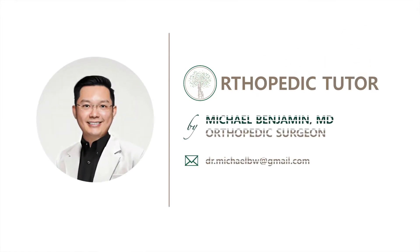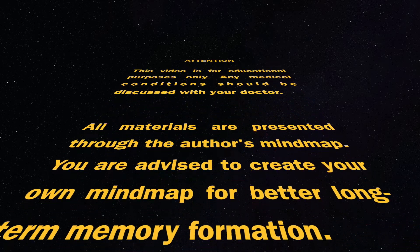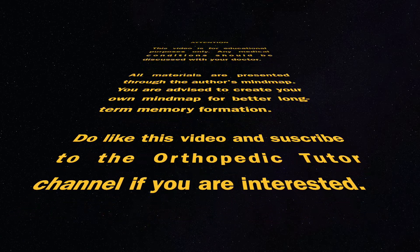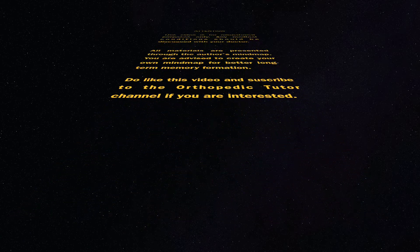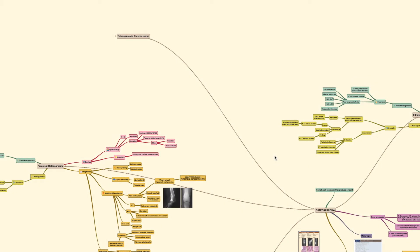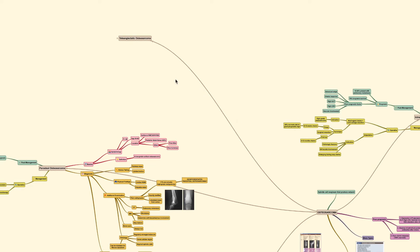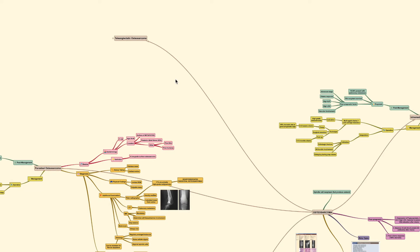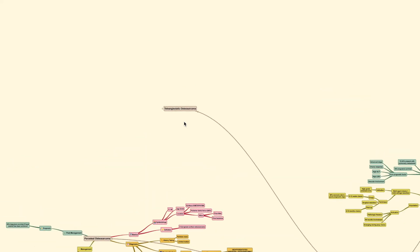Let's get started. Today we are going to discuss the last type of osteosarcoma, which is the teleangiectatic type. Be sure to check out my previous videos regarding the classic intramedullary type of osteosarcoma and also the parosteal and periosteal types.